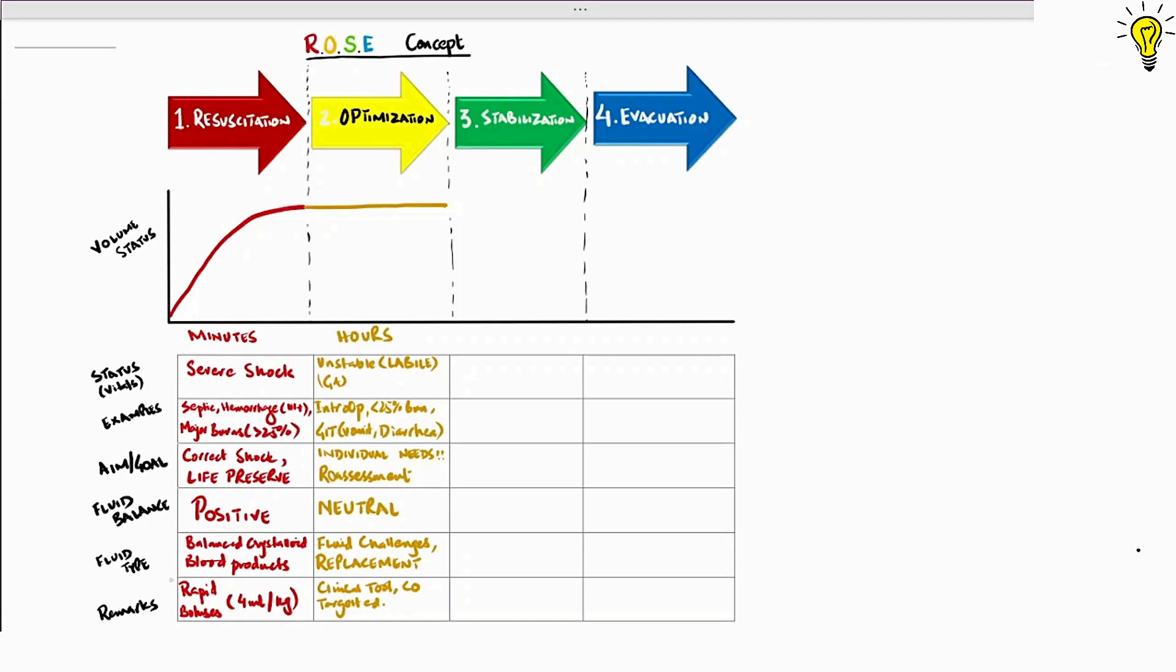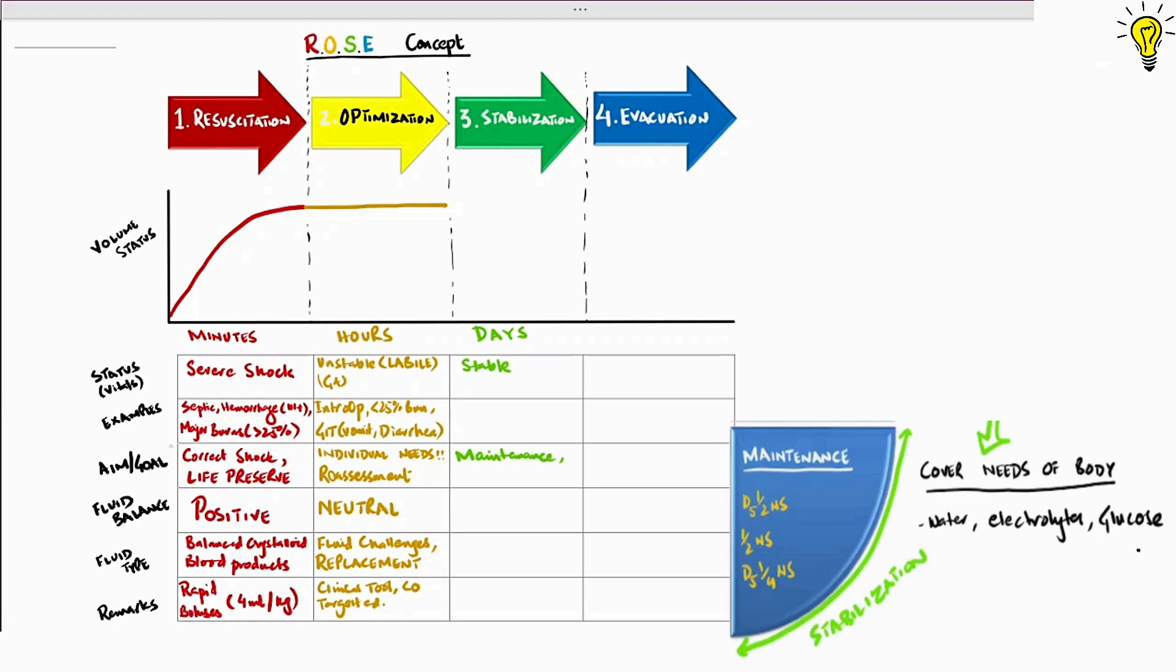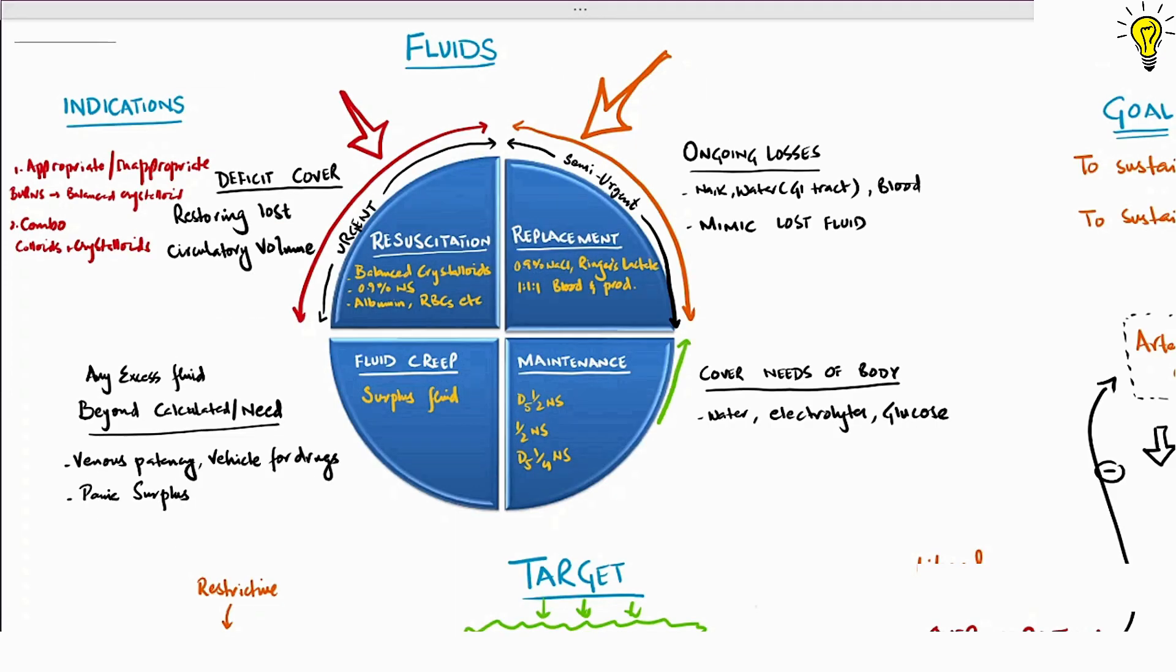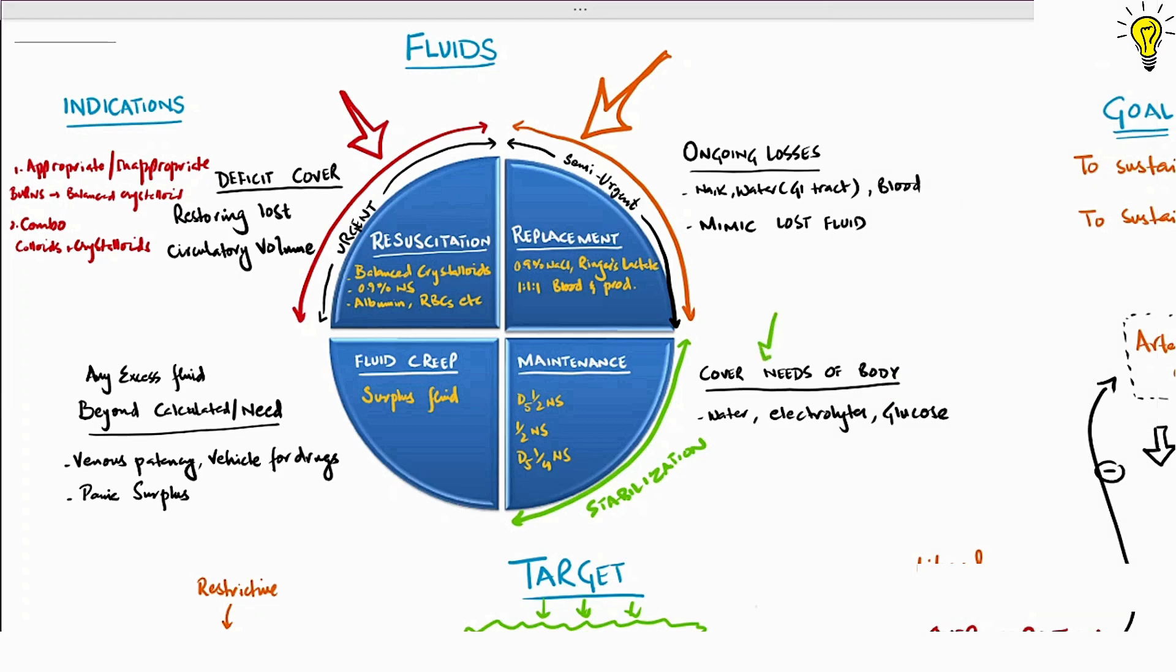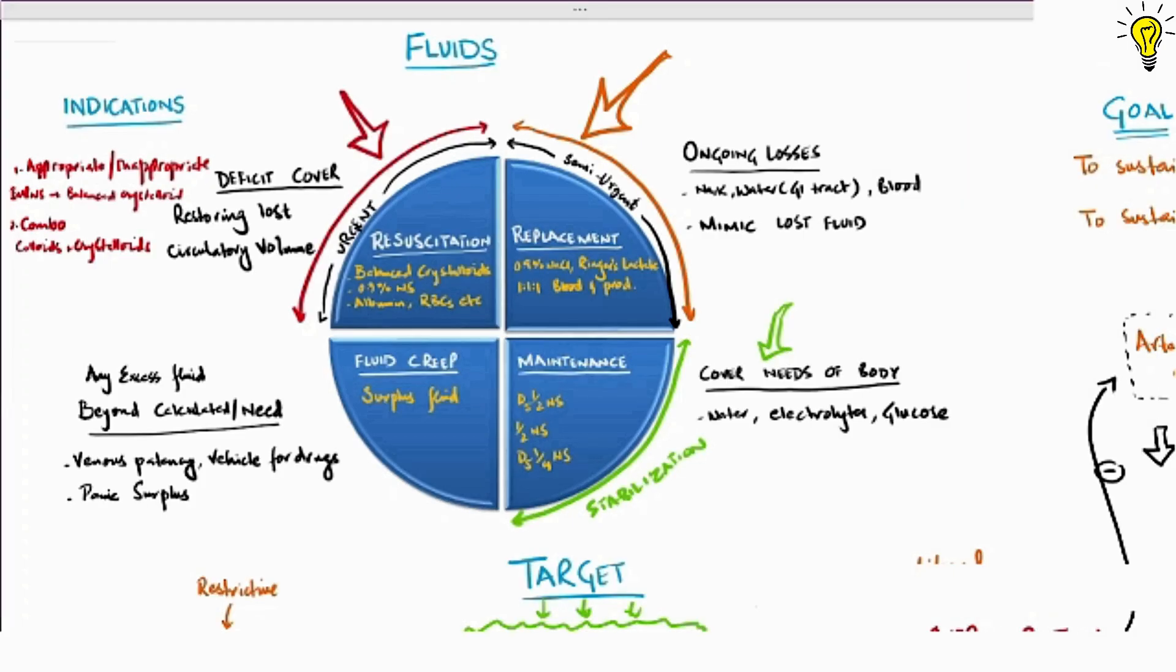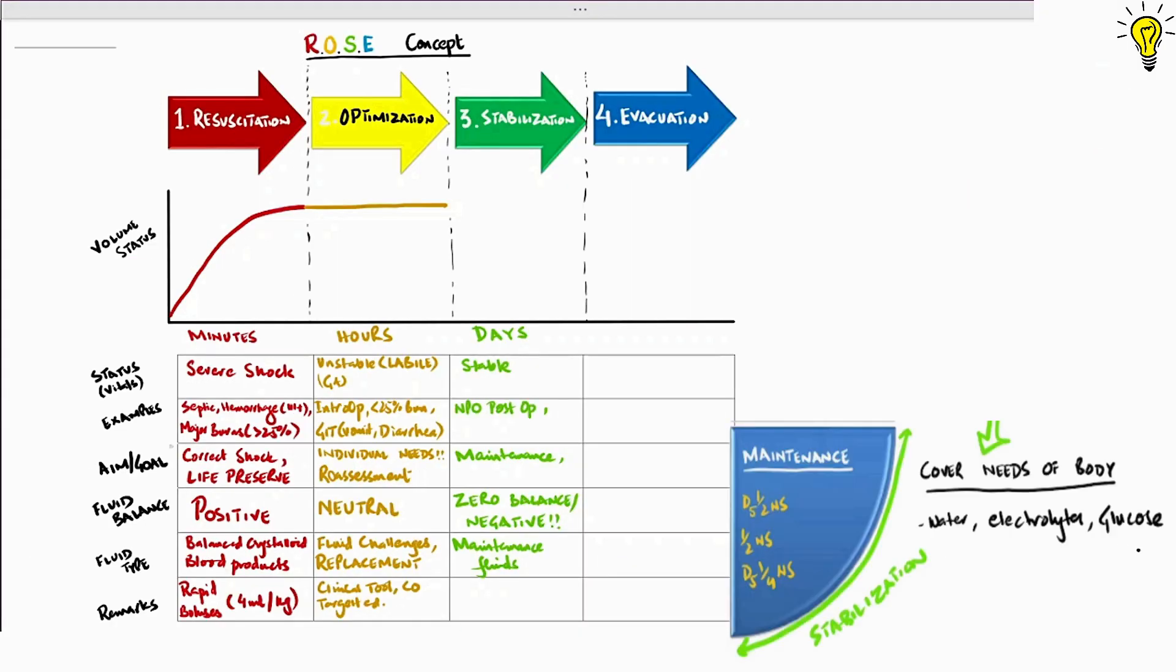Once the patient is stable, stabilization phase begins and develops over days. The aim through this phase is maintenance of electrolytes, water, glucose and basic requirements of body for organ support. Fluid balance through this phase should be zero to even negative. We have covered already the maintenance quarter of fluid indication.